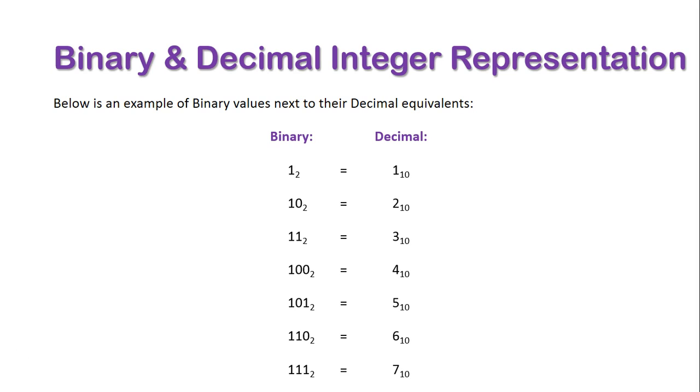I hope this gives you a bit of an understanding of binary and decimal integer representation within systems. Decimal values are easier for us as humans to understand, but binary values are what machines understand. We need to have a conversion method to understand how these take place. I will develop another video following this one, going further into detail about how we convert binary digits into decimal digits and vice versa.